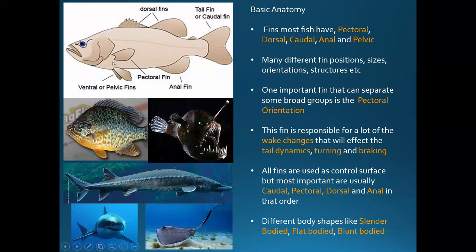In this picture the pectoral fin is more vertically attached, same with this sunfish and this anglerfish. These fish usually have more control over their pectoral fin and can use it for things like turning, braking, and dynamically affecting the wake that hits their tail. Fish like the sturgeon or the shark, who have more horizontal pectoral fins, don't really have that much control over them and use them more for stability and some maneuvering.